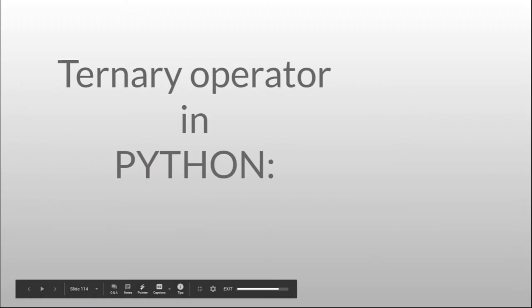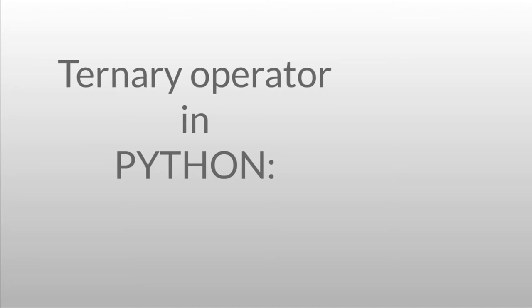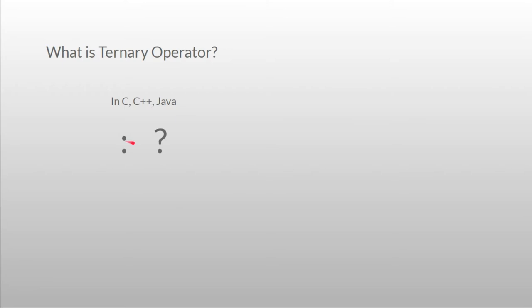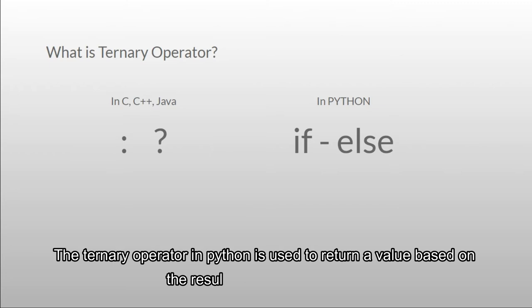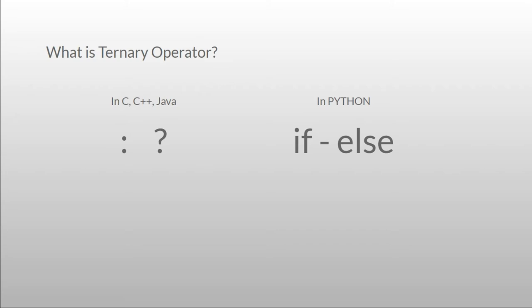Welcome back. Let's see the ternary operator in Python. In other languages, the ternary operator consists of a colon and question mark, but in Python it consists of the keywords 'if' and 'else', making it more readable. The ternary operator in Python is used to return a value based on the result of a binary condition. It looks similar to an if-else condition block, but it also returns a value, behaving similar to a function, although it is neither an if-else block nor a function.